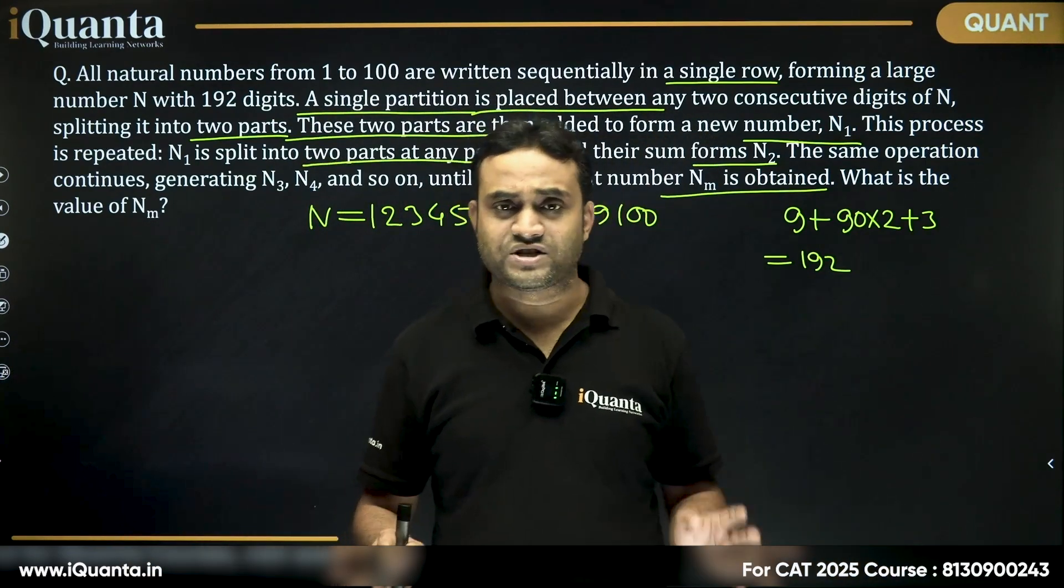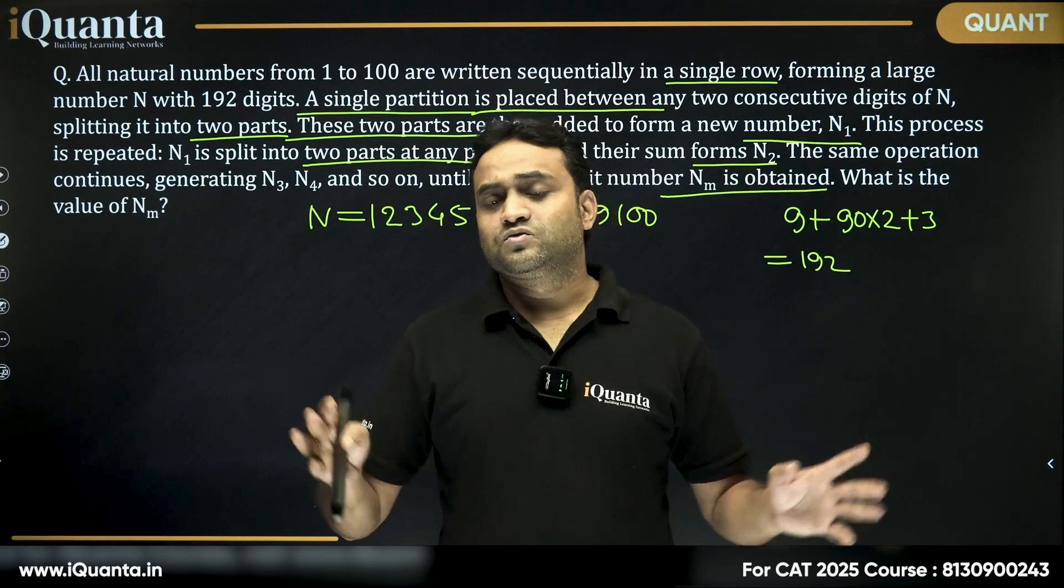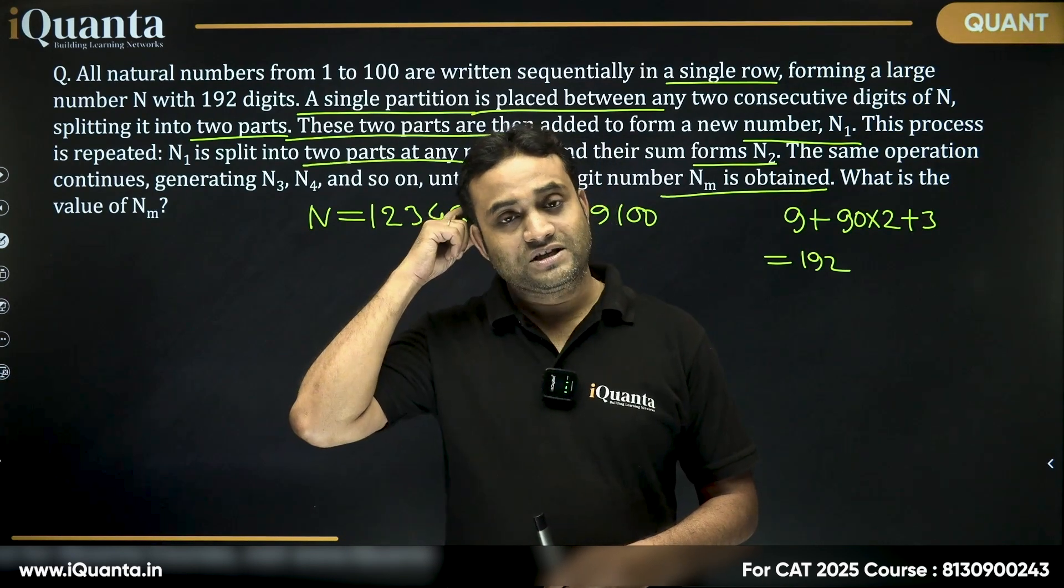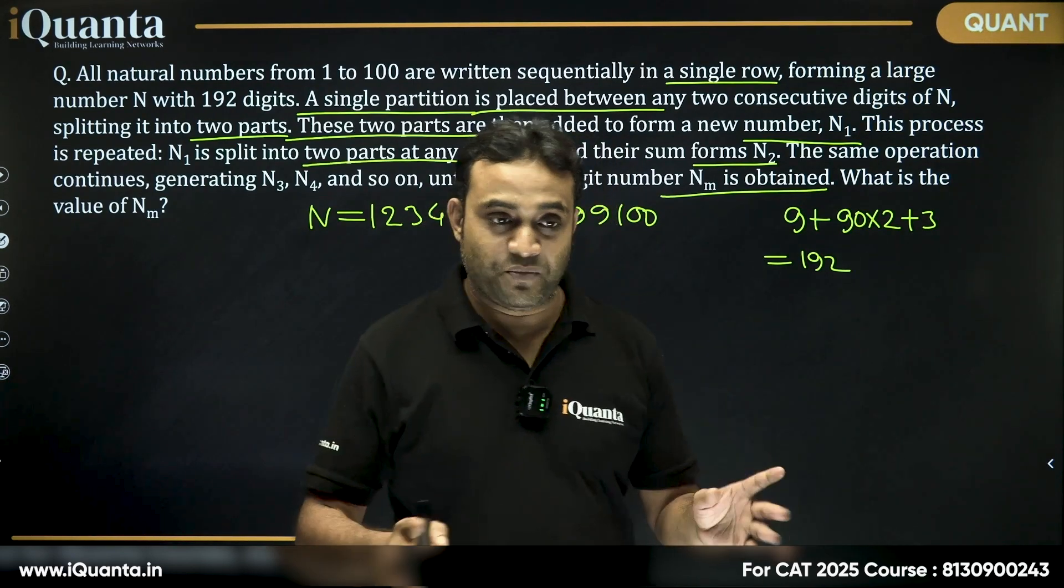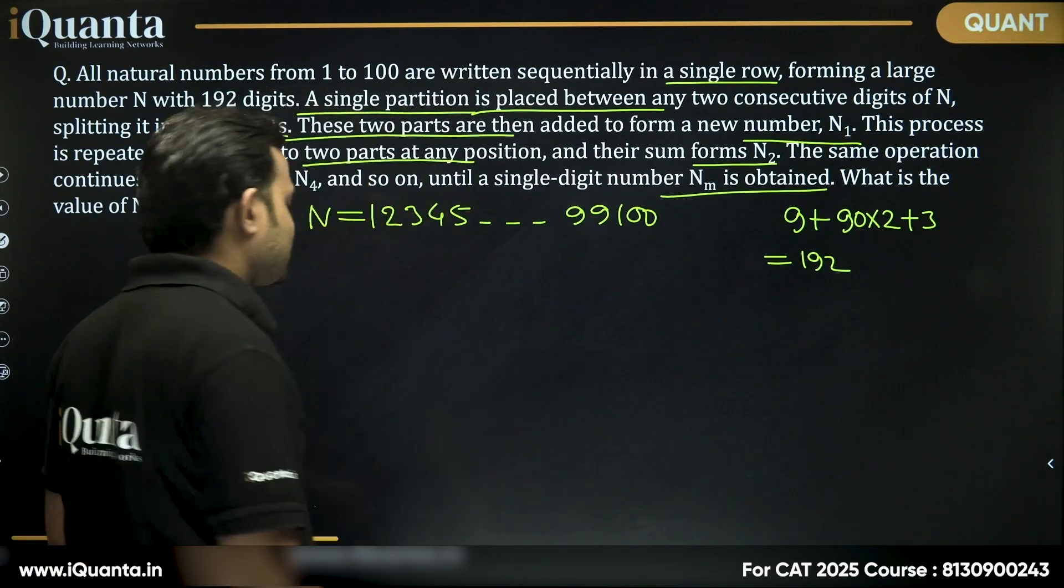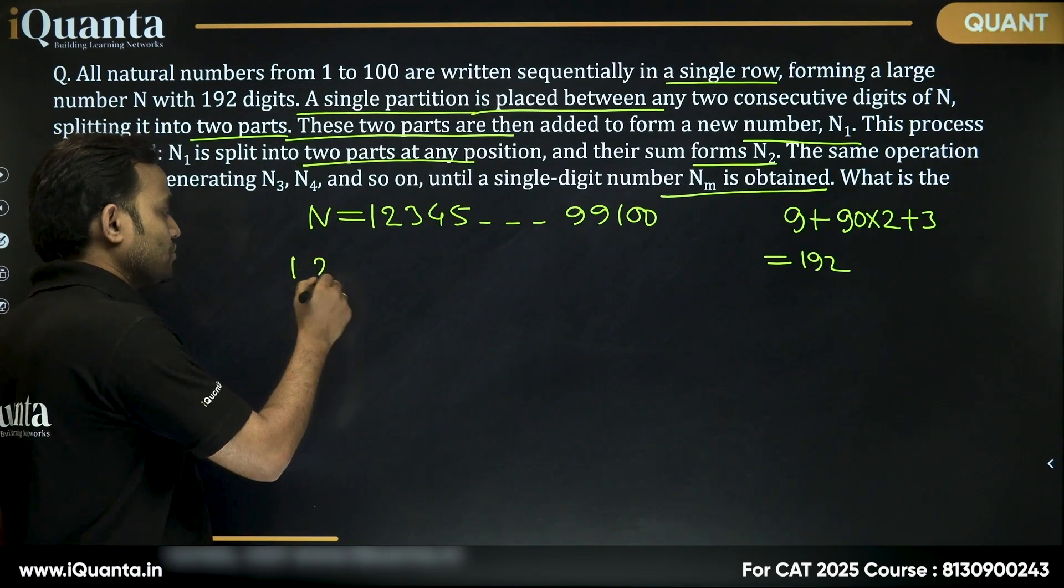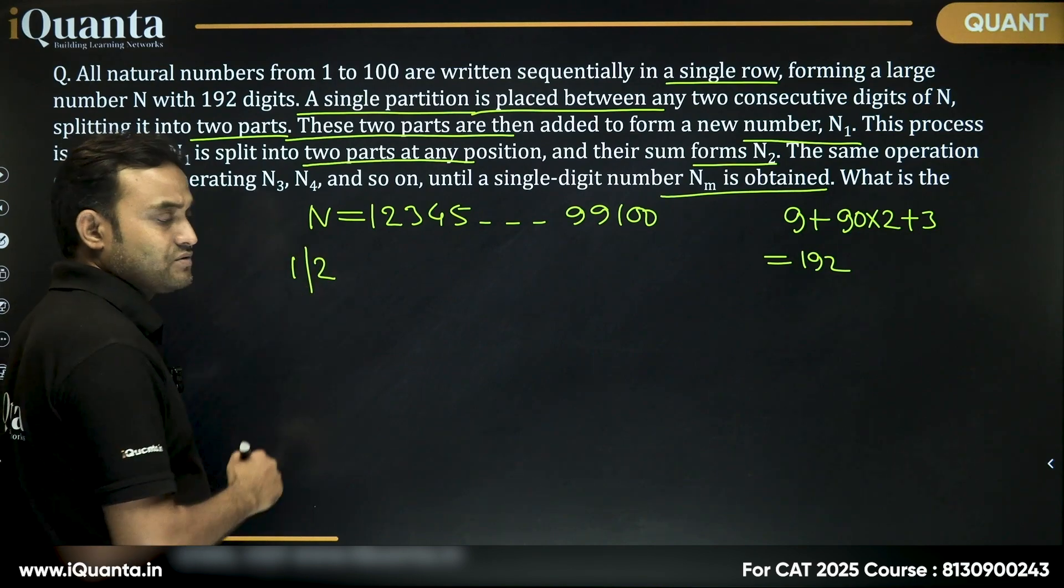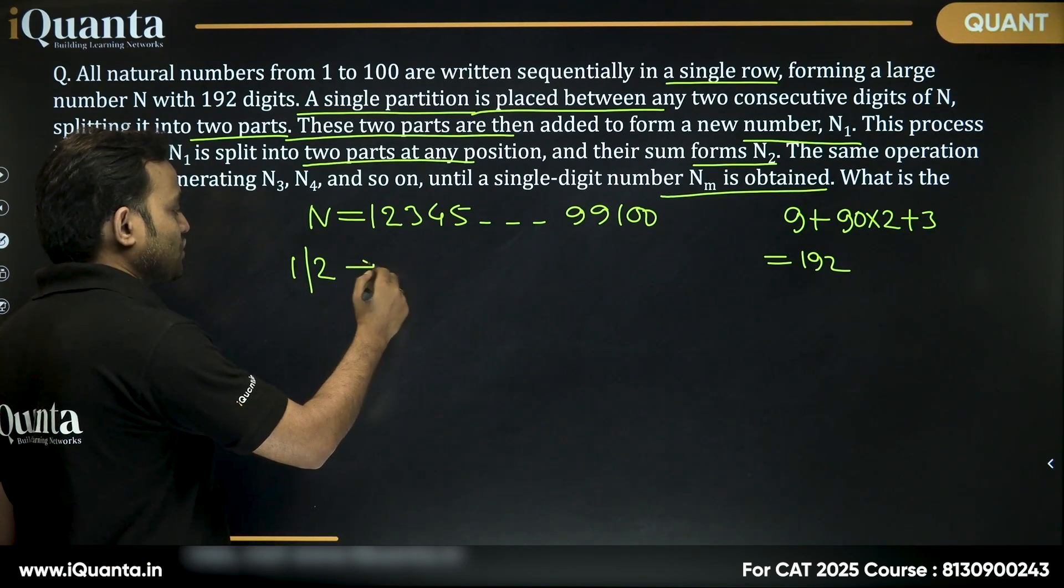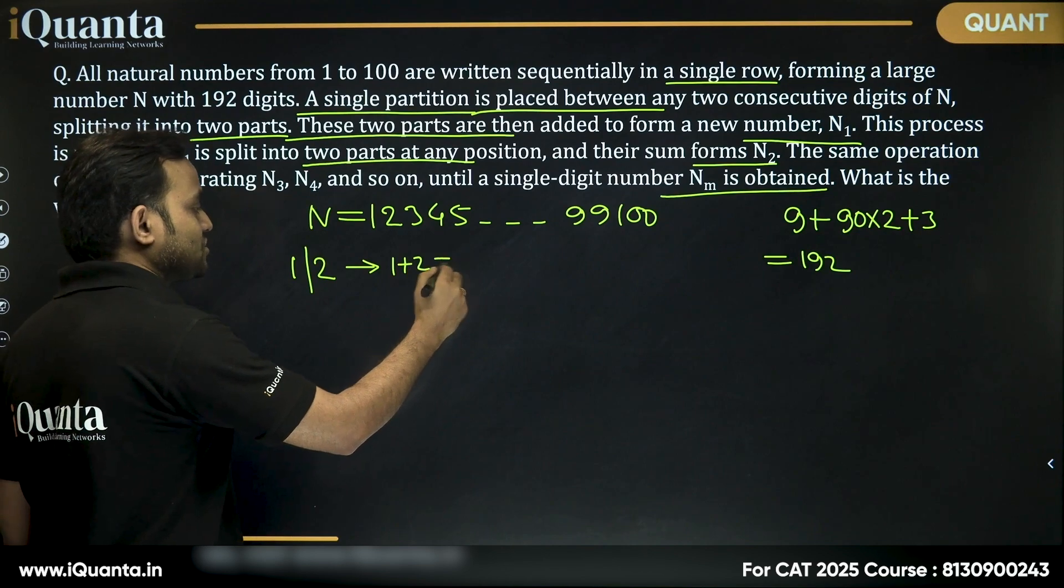So, surely we are not going to check all these 192 digits, right? All these long numbers, the same operation. But we can try by taking some example, like if I'm taking only a two digit number, 1, 2. If I put a partition here, so 1 plus 2, what we are getting? 1 plus 2 is equal to 3.